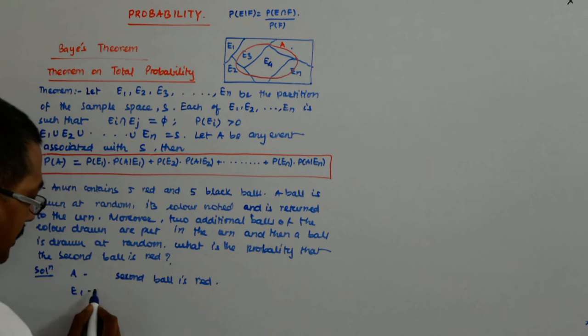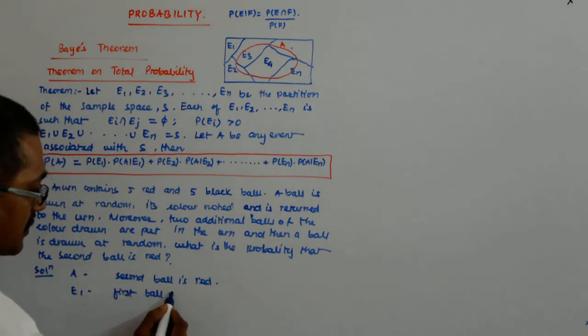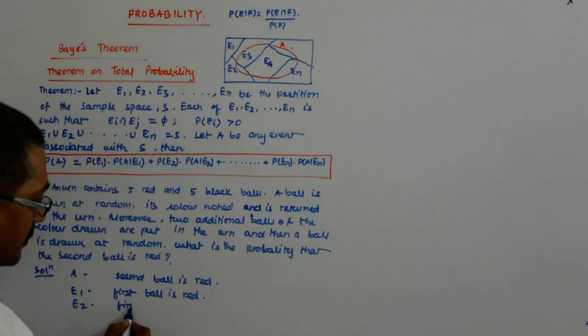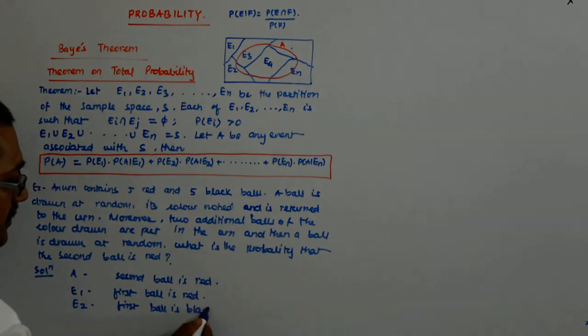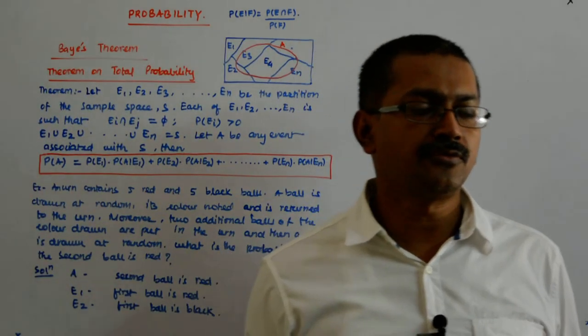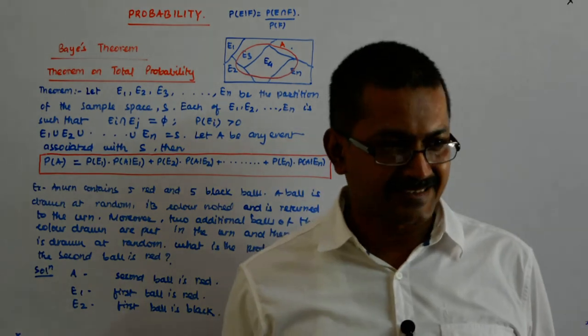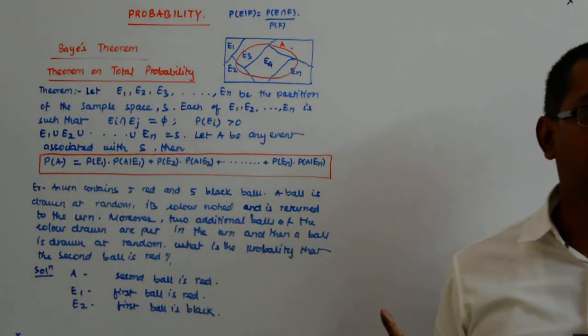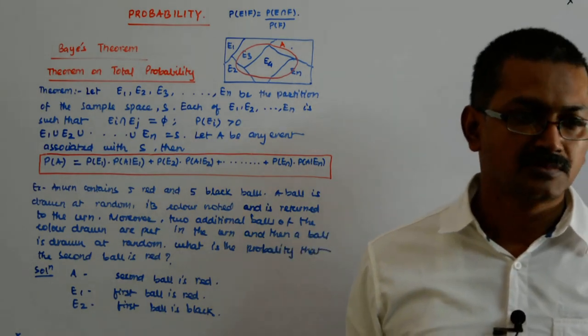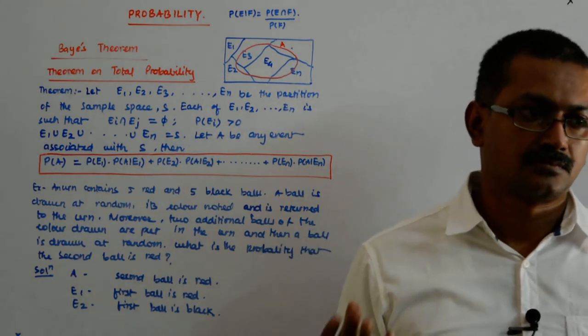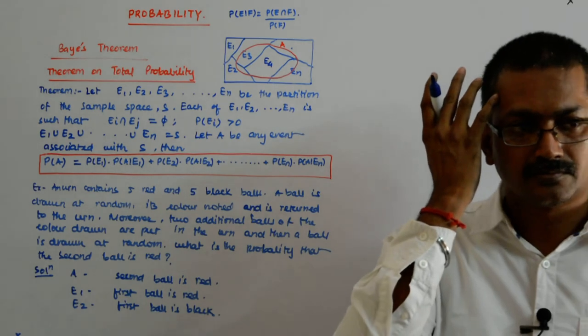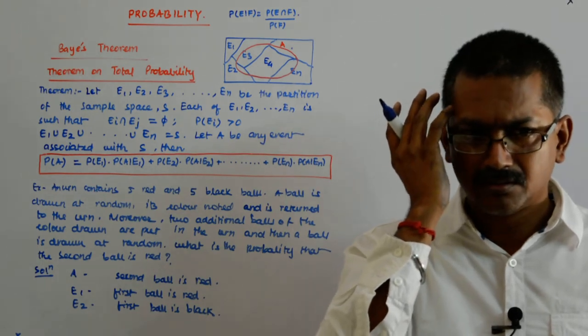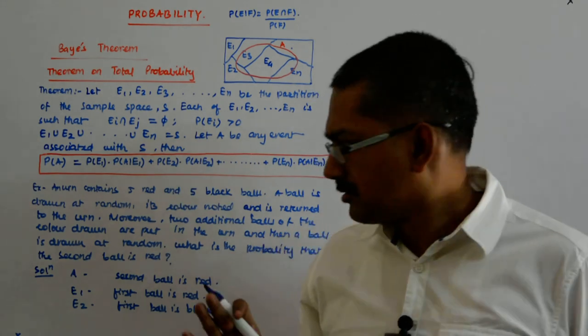Now, in what two manner the whole sample space can be divided? Either you can say E1 that the first ball is red or you can say that the first ball is black. Are they mutually exclusive? Are they a disjoint set? Yes, they are. They are a valid partition.